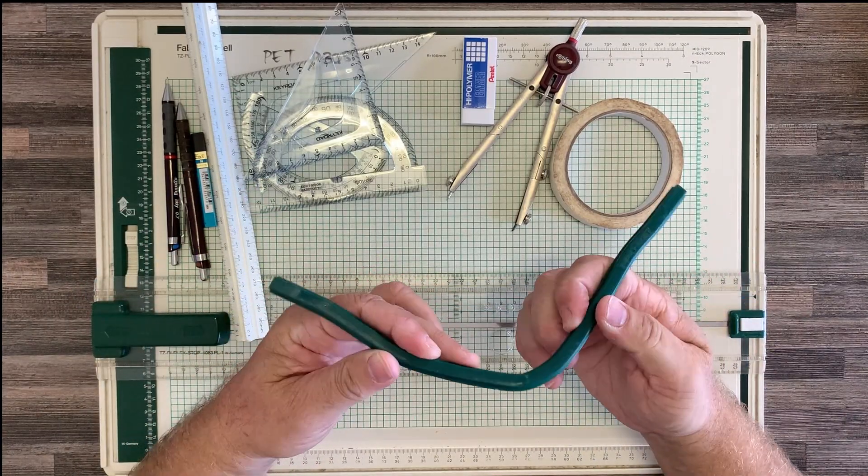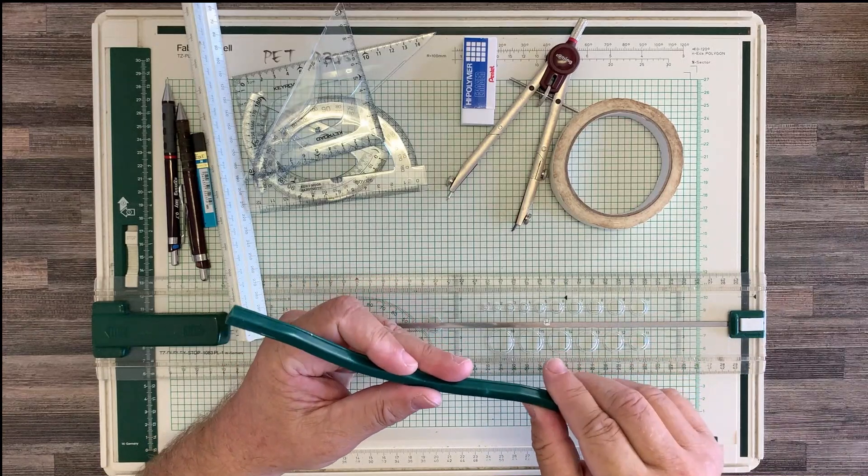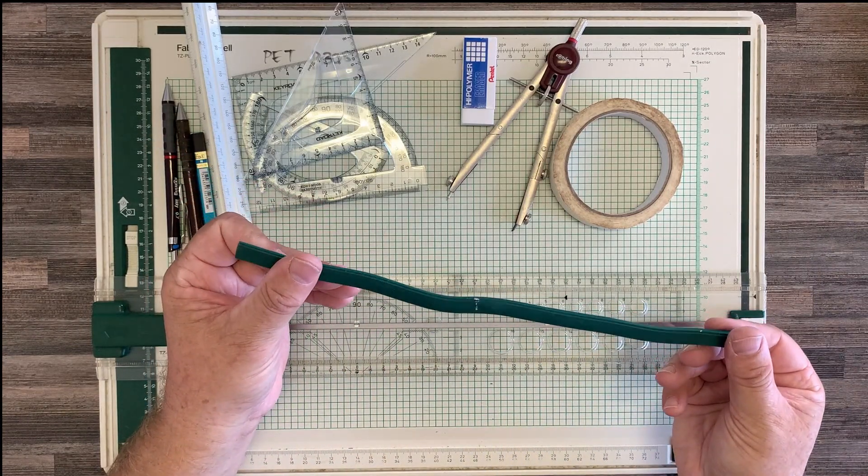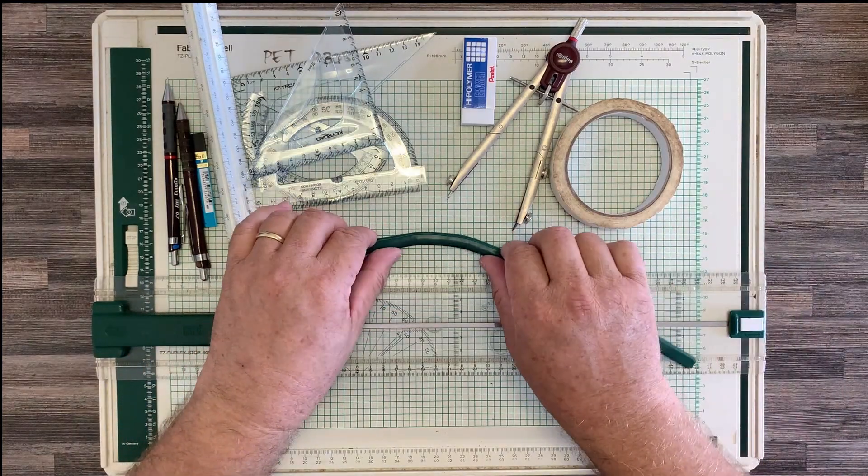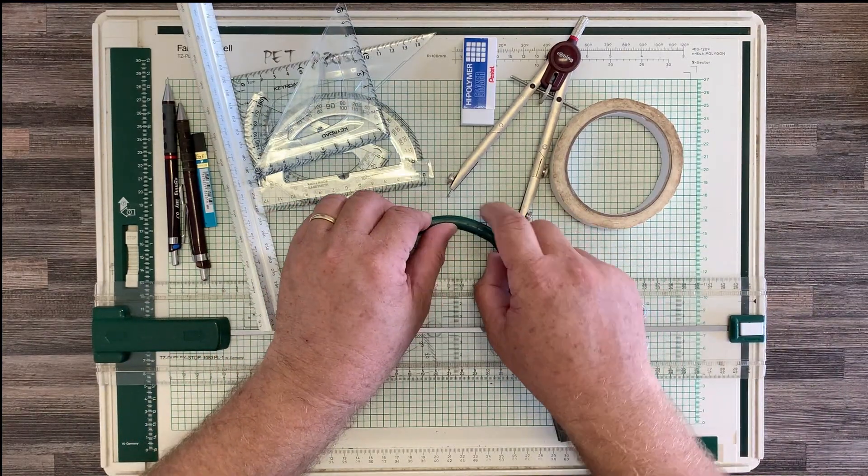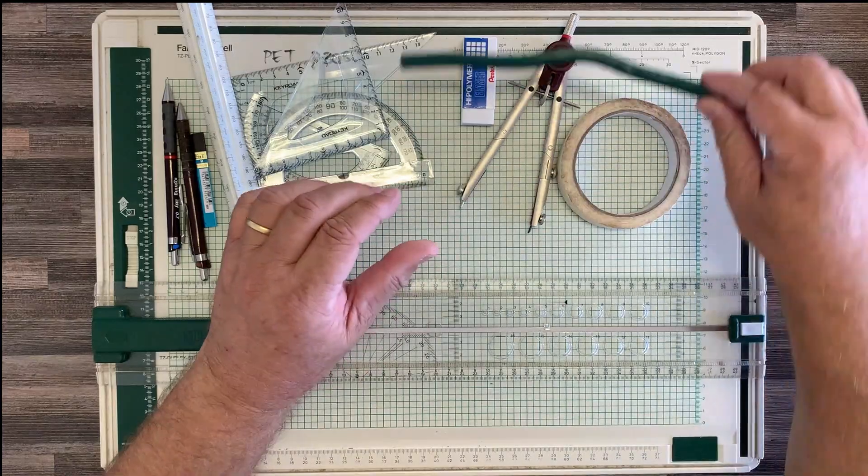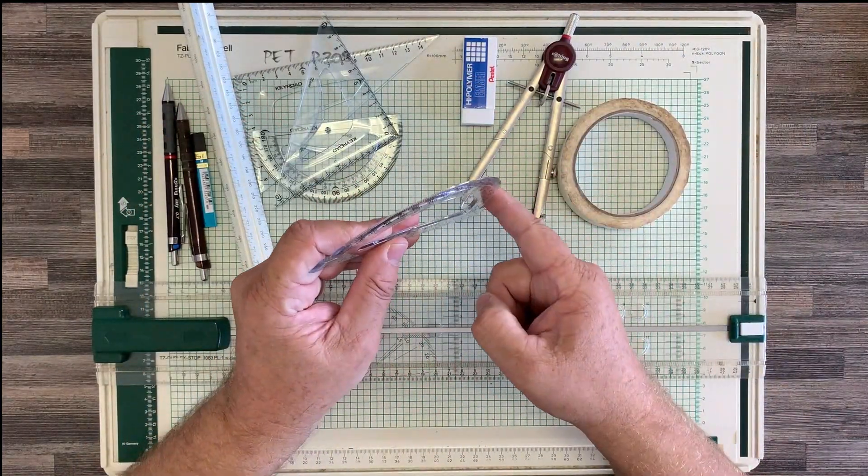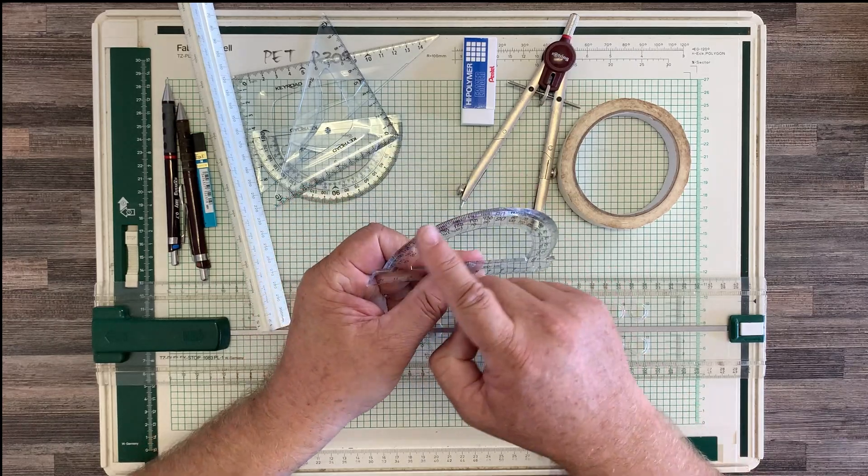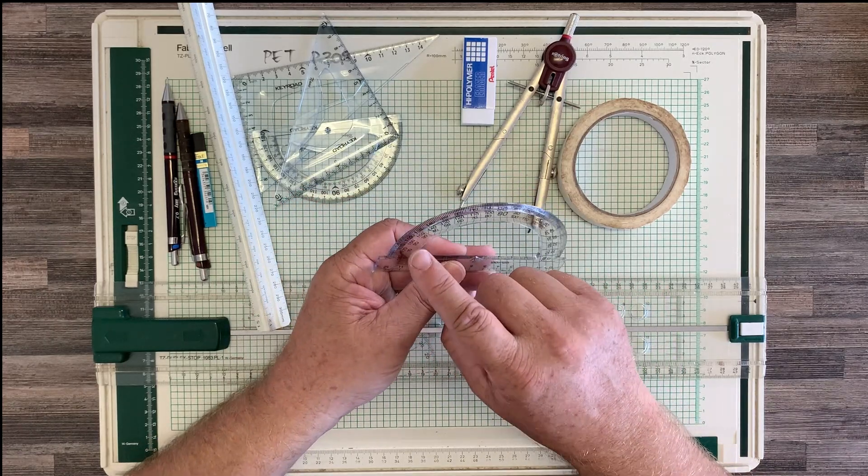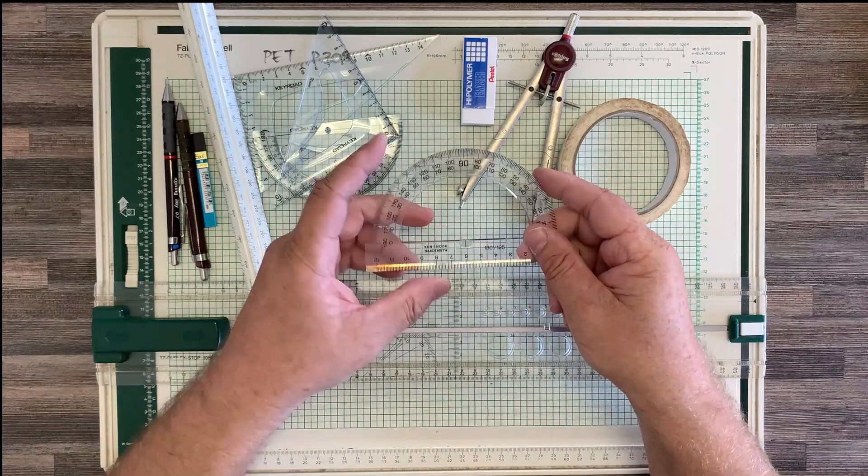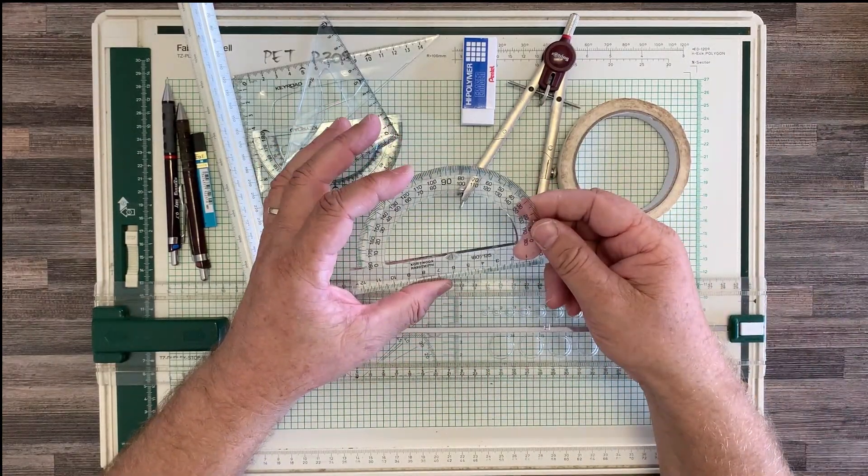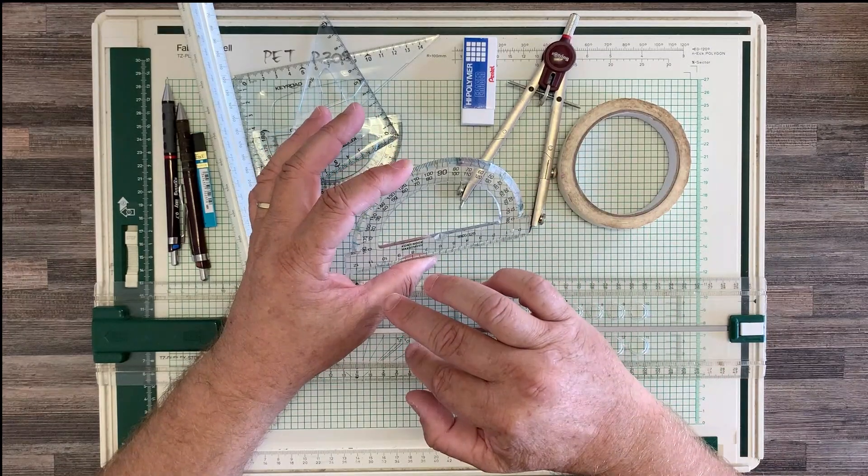All right, other optional items that you could purchase, this is called a flexi curve. So it's a little bit damaged because it's been with me for many, many years, but you can create a curve and draw around the edge of it. A French curve has a variety of shapes to it. So this is a radius, so this is a constant radius. French curve has a changing radius, so it's got a shape on it, but it's like different S shapes.